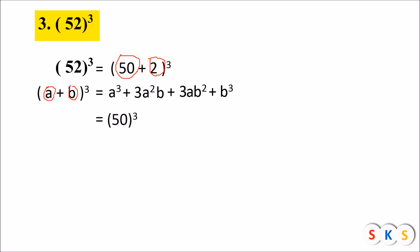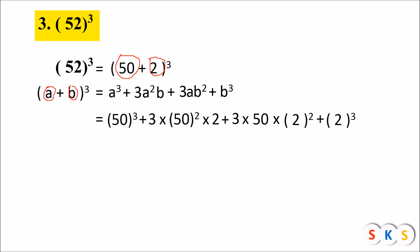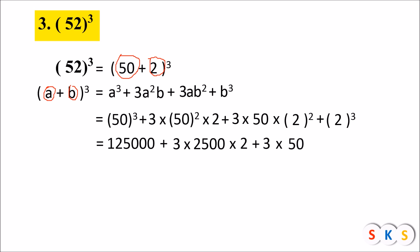Substituting a = 50 and b = 2: we get 50³ + 3 × 50² × 2 + 3 × 50 × 2² + 2³. Cube of 50 is 1,25,000. Square of 50 is 2500. Square of 2 is 4, and cube of 2 is 8.